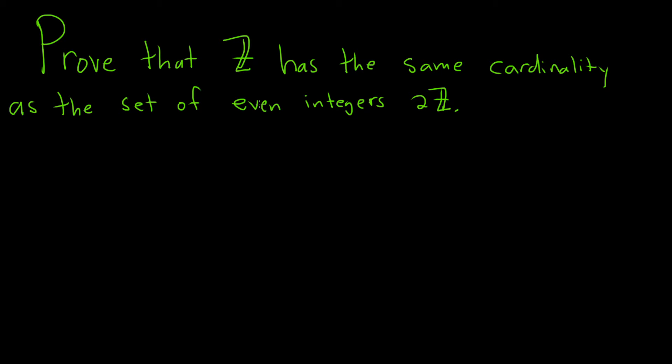In this problem we're going to prove that the set of integers, capital Z, has the same cardinality as the set of even integers, which we're denoting by 2 times capital Z.